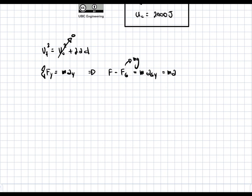And we can directly solve for A. So A is going to be equal to 400 newtons minus 30 kilograms times 9.81 meters per second squared divided by 30 kilograms. And this is going to be equal to 3.5233 meters per second squared. So now we have an acceleration.